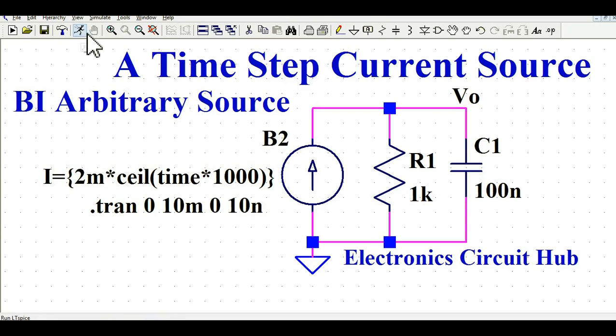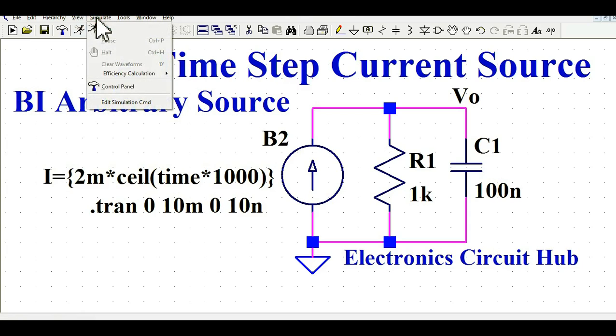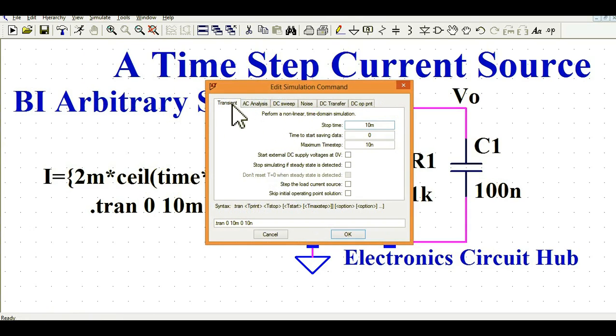Now let me straight away run the simulation and show you the result of this circuit. So if you go to simulate, edit simulation command, and if you look at this transient, here you can look at the stop time is 100 millisecond and the maximum time step is 10 nanosecond. I click OK.